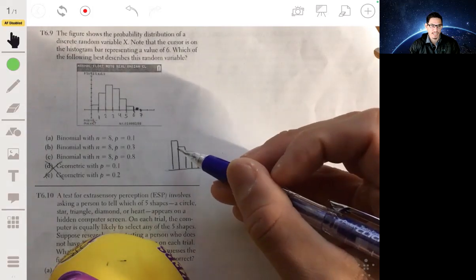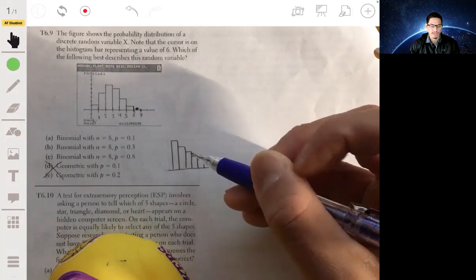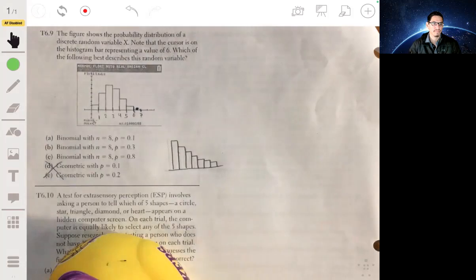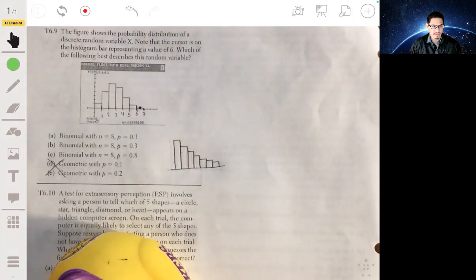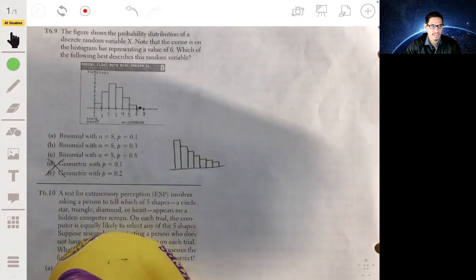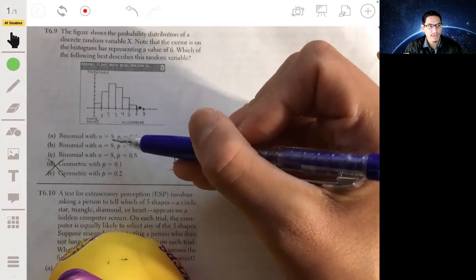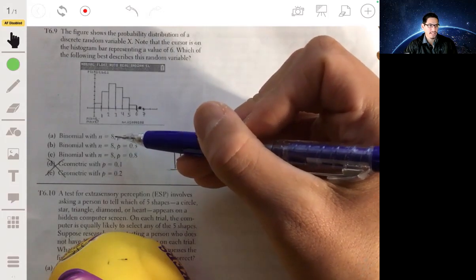So we know it's not going to be geometric. All geometric distributions follow this sort of shape. Now we have to decide what type of binomial distribution this is. We have all these with the same number of trials, which is eight, but the probabilities are different.